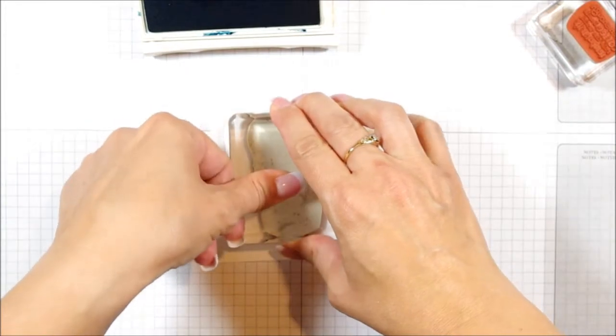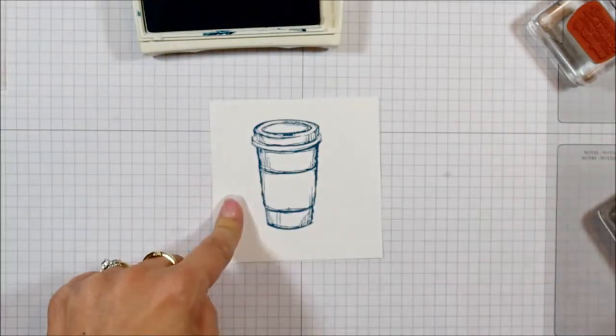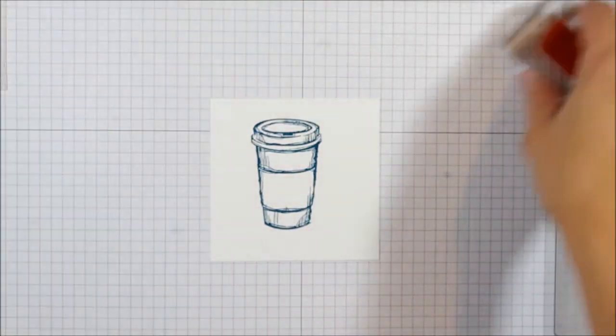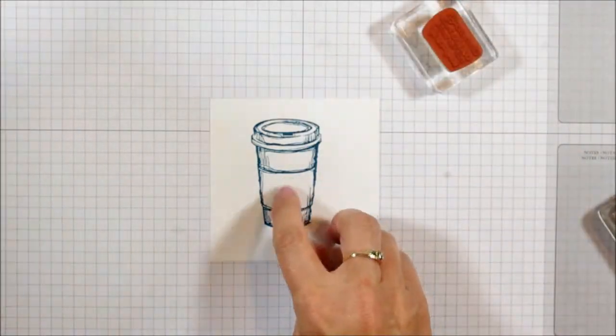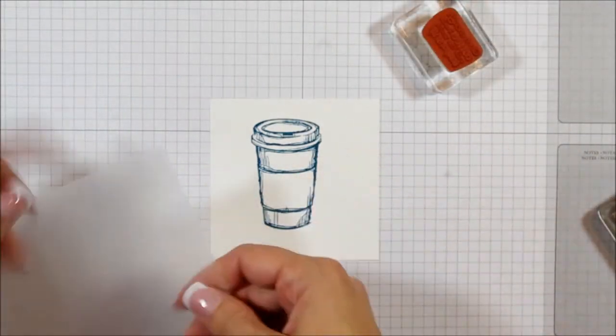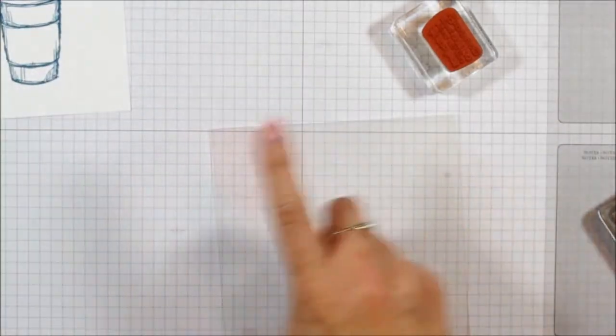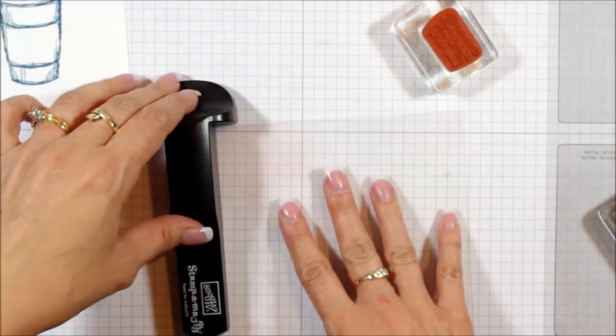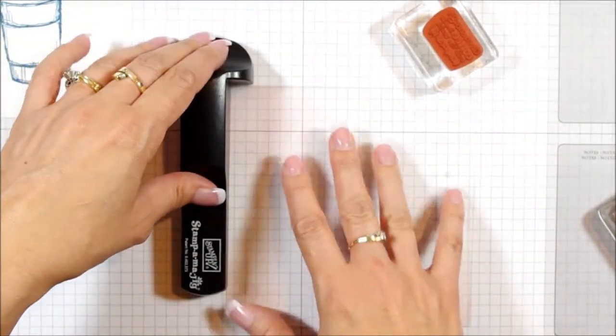So the first thing I'm going to do is I'm going to stamp my coffee cup where I want it to be, and then I want to do my greeting inside this space. So I can eyeball it, or if I don't want to eyeball it, I can do it this way and know that it's going to go exactly where I want it to go.